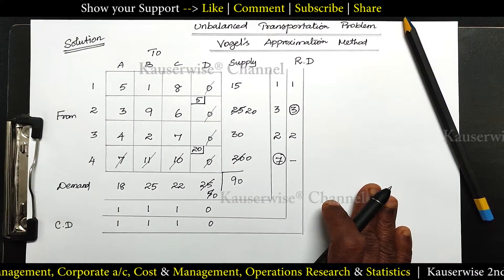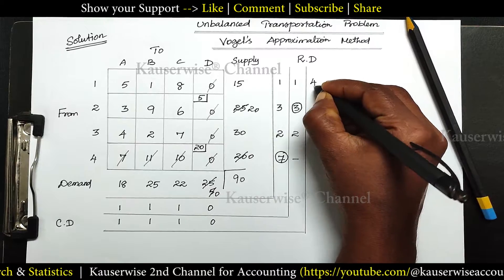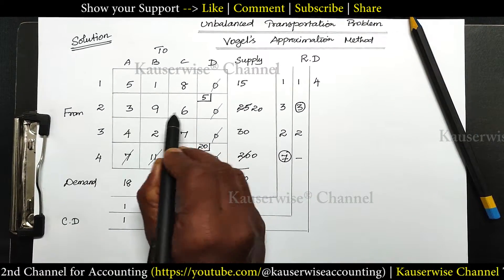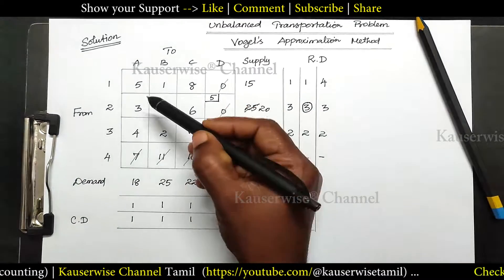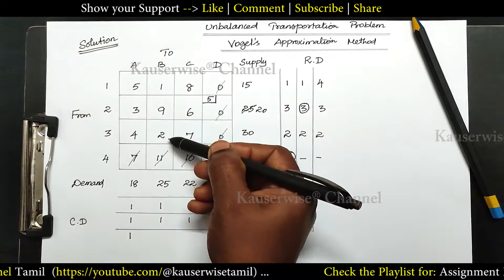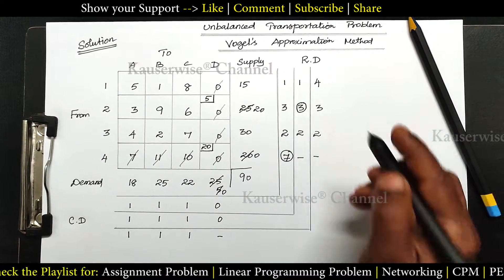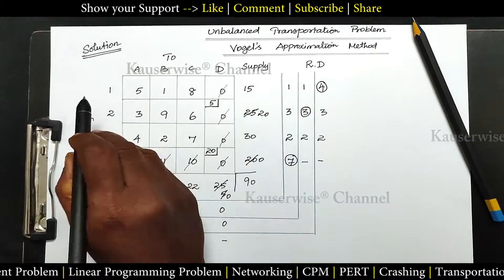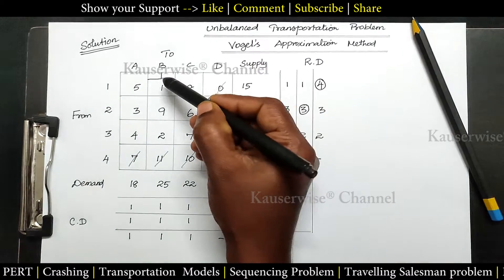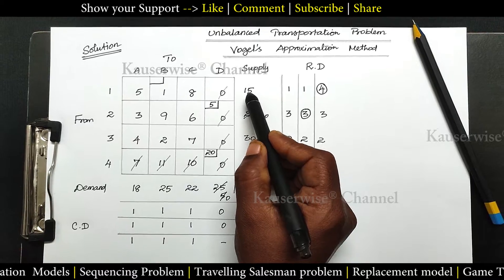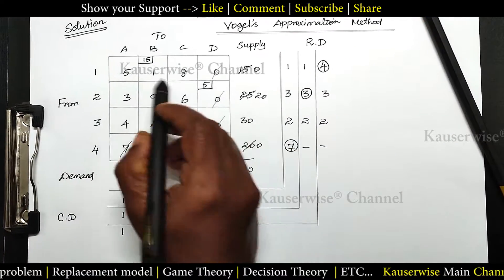Again we find row difference and column difference. First row: least value 1, next 5, difference 4. Second row: least 3, next 6, difference 3. Next: 2 and 4, difference 2. Last row: 0. Column: 3 and 4, difference 1; 1 and 2, difference 1; 6 and 7, difference 1; last column dash. The highest penalty is 4. So I am going to allocate from this row — least value is 1. Comparing demand 25 and supply 15: 15 is least, so allocate 15 here. Supply becomes 0, demand balance becomes 10. This particular row will get cancelled.